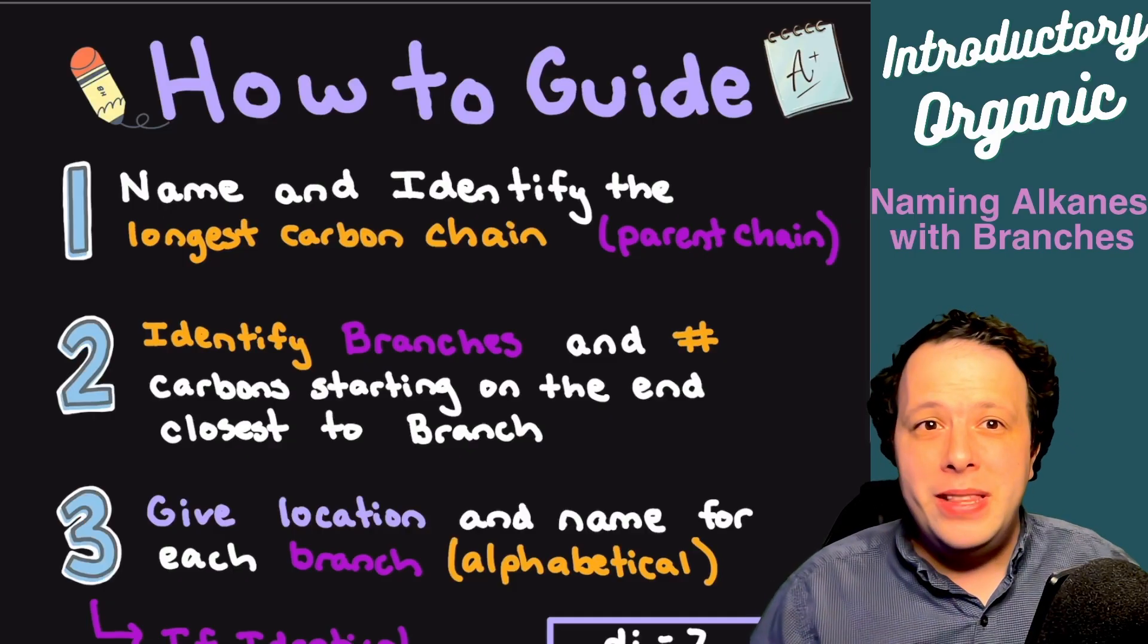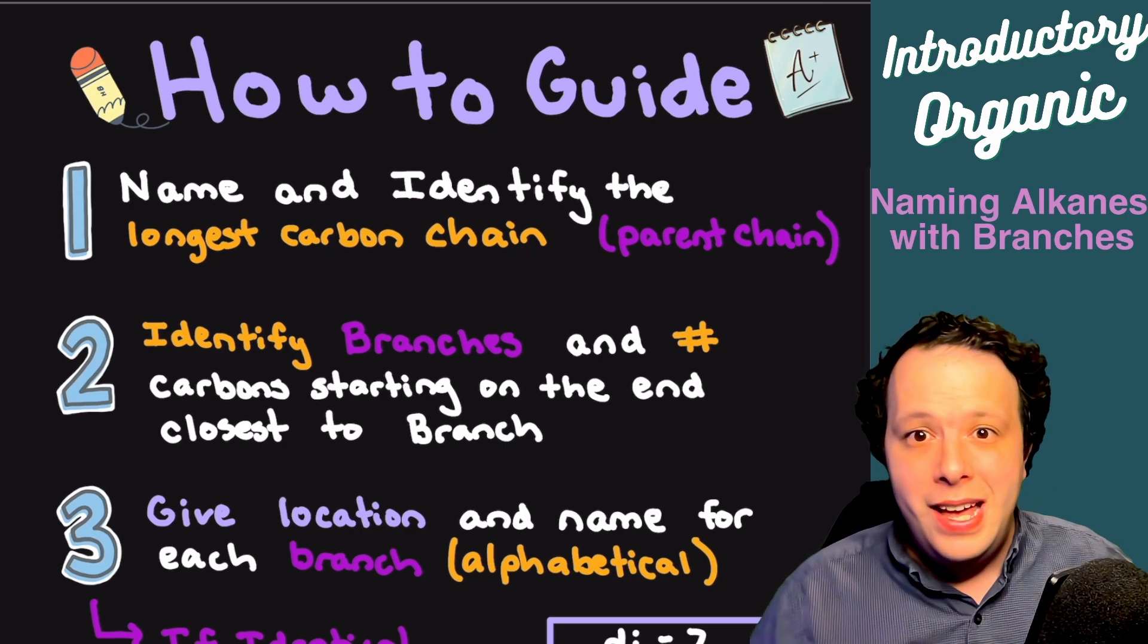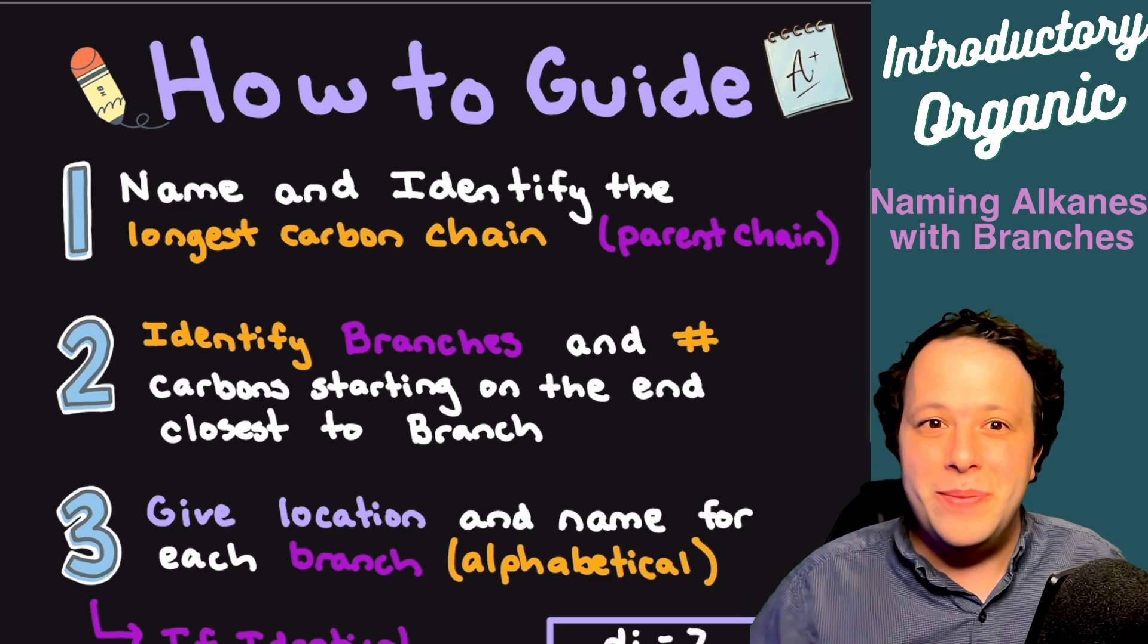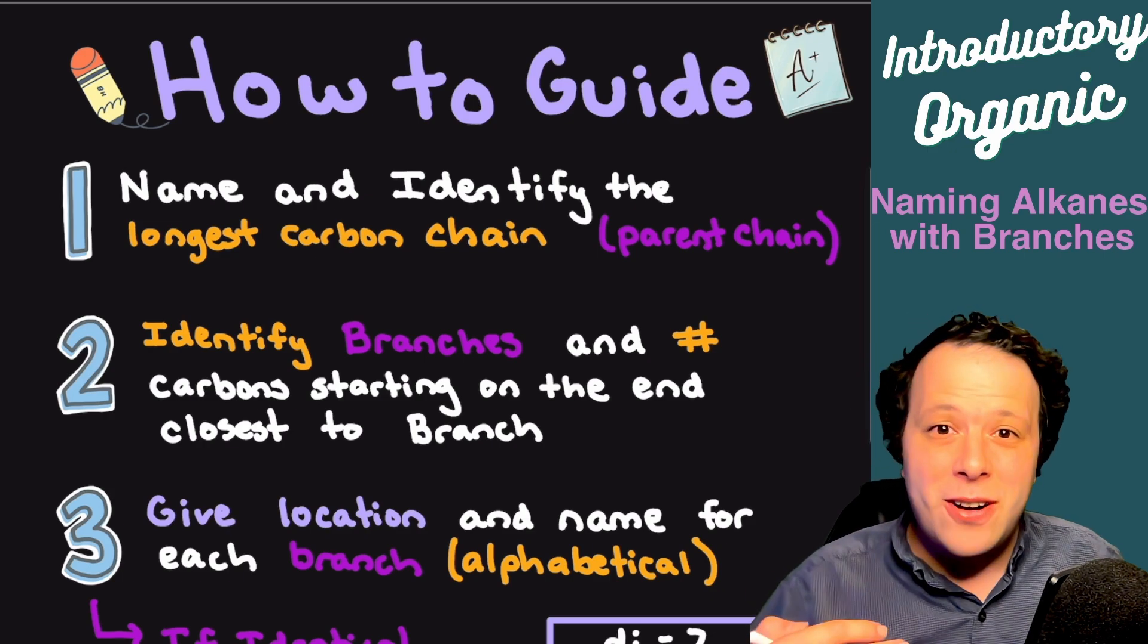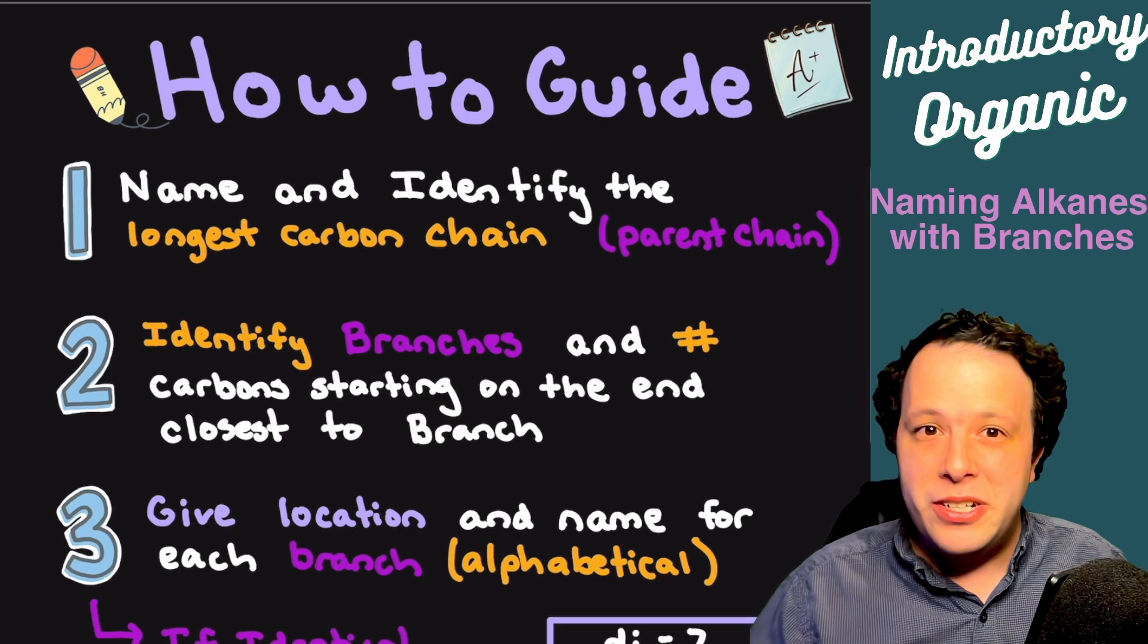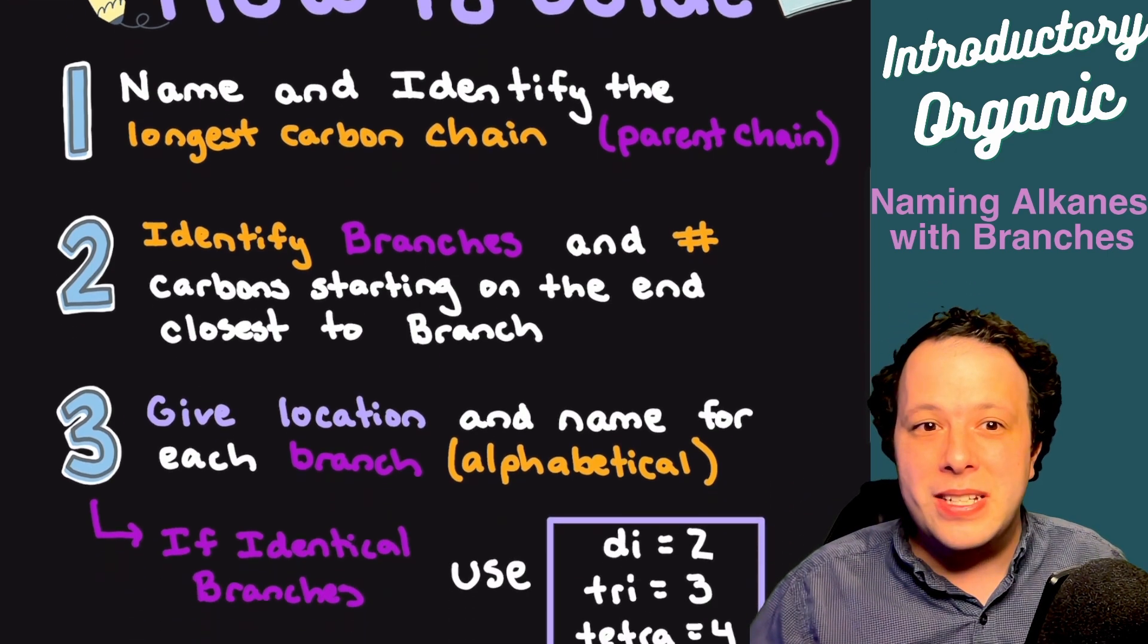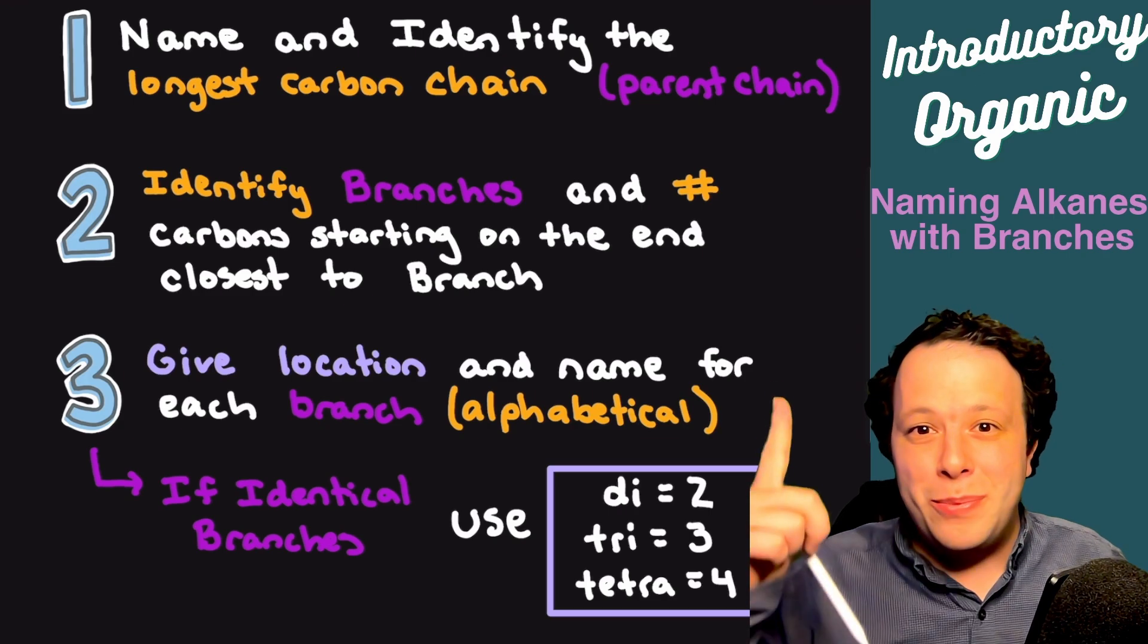Let's go through this and do a how-to guide of exactly how to name them. First, when you are naming these, you have to identify and name what the longest carbon chain is. This has to be continuous carbons connected together in one solid line. The second step is identifying all branches. There's a number of ways to do this: you can circle them, underline them, put arrows on them, star them, but you need to be able to identify your branches. Then you need to number your carbons on your parent chain, starting on the end that is closest to a branch. Then you want to give the location and name each branch in alphabetical order. Sometimes you might have identical branches and we'll have to fold in some special prefixes as well.